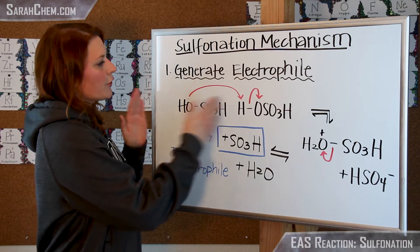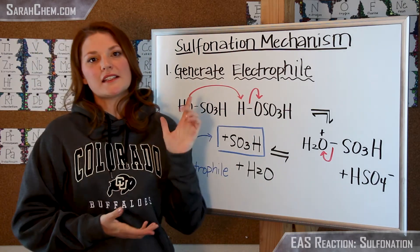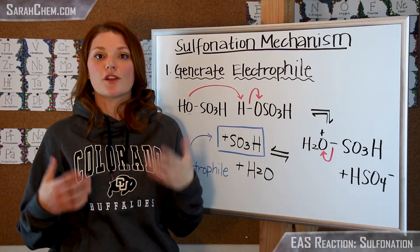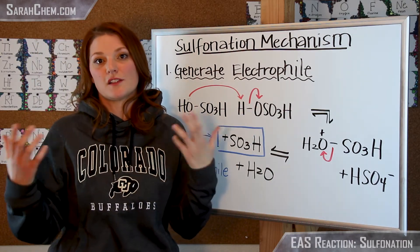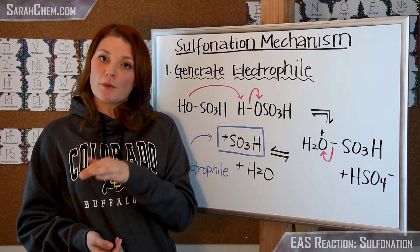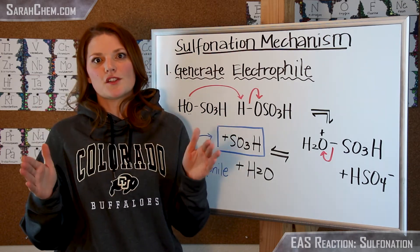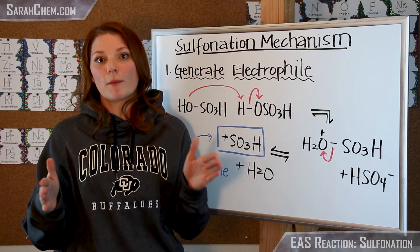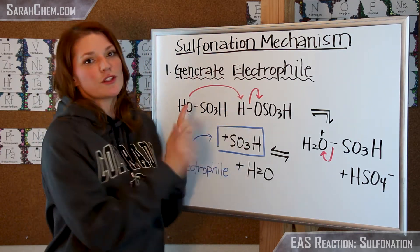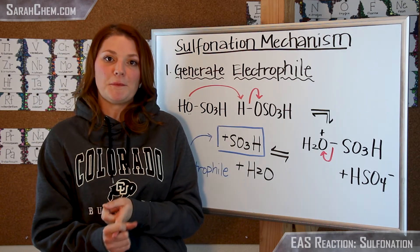In order to generate our electrophile, we're going to be taking it from the case of having a concentrated sulfuric acid solution. You could also use fuming sulfuric acid, but we're just going to consider it from this concentrated solution format. In that case, you're going to have two sulfuric acids that react with one another.